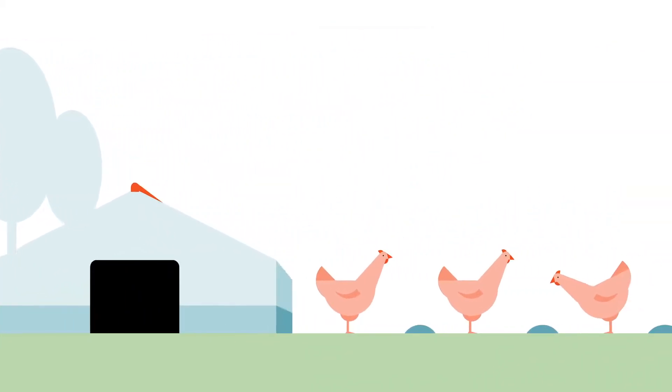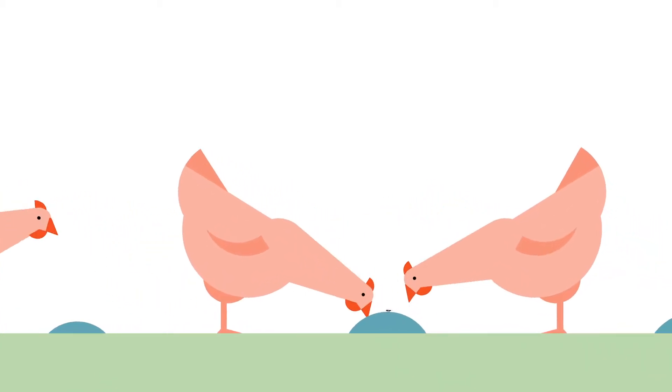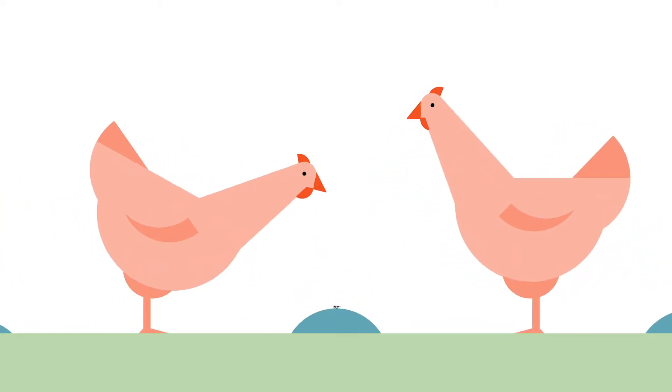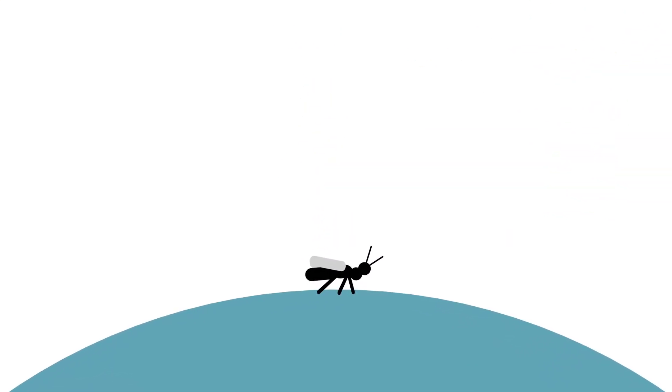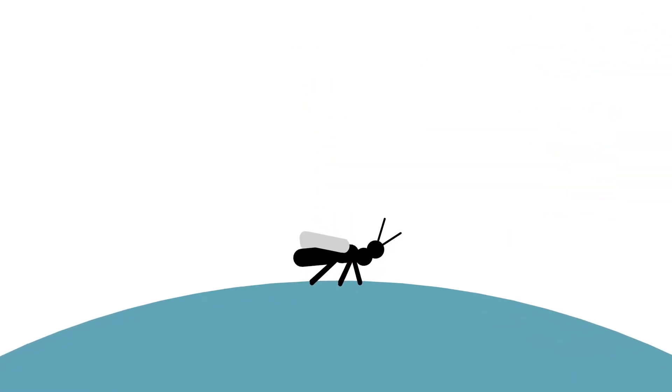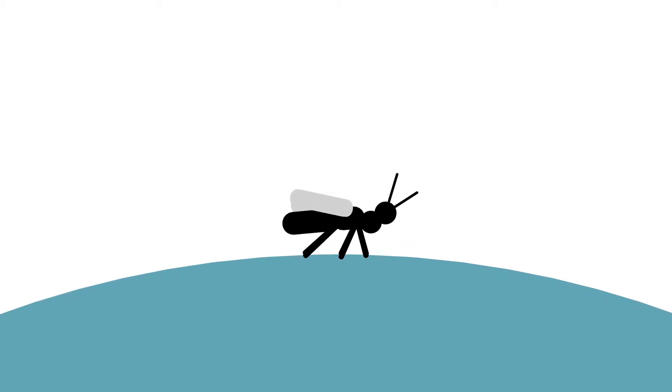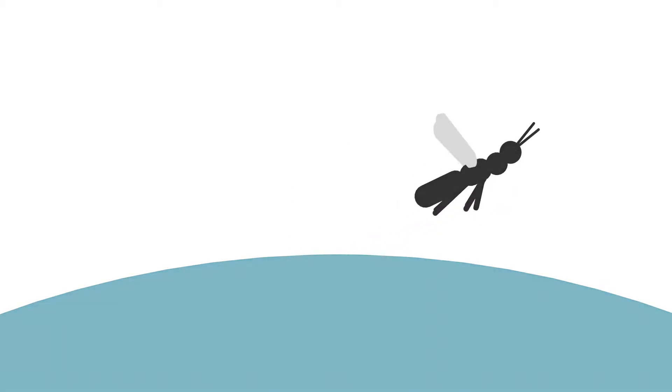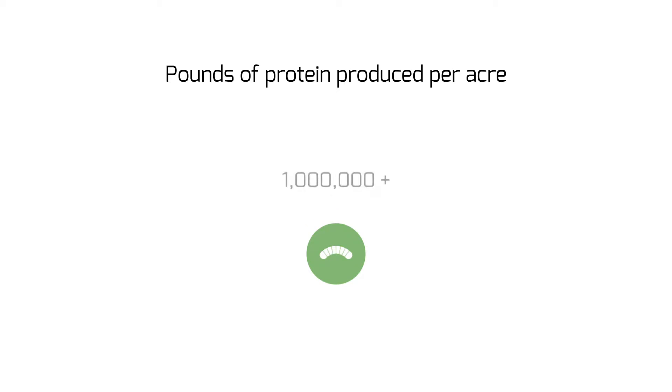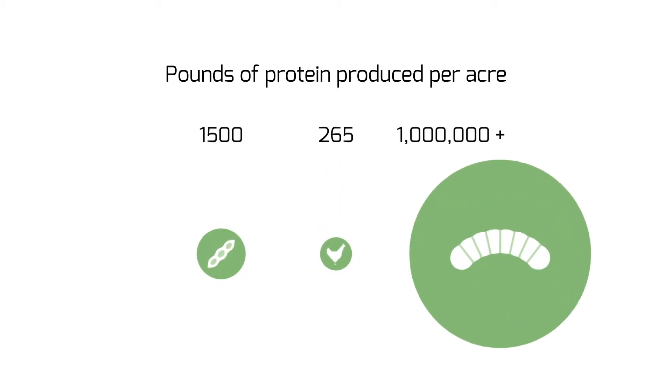But sometimes, big problems can have tiny solutions. Meet Hermitia illusens, the black soldier fly. A rich and incredibly efficient source of nutrients. Its tiny larvae deliver thousands of times more protein per acre than any of its animal and vegetable counterparts.